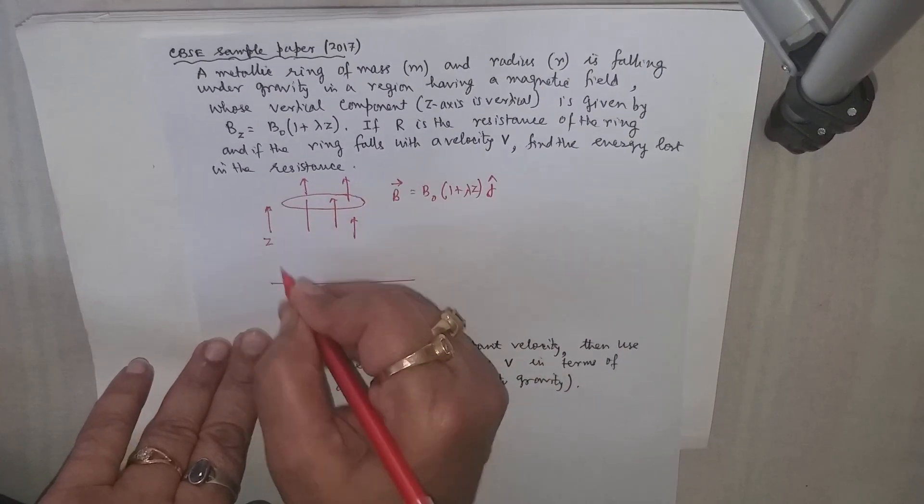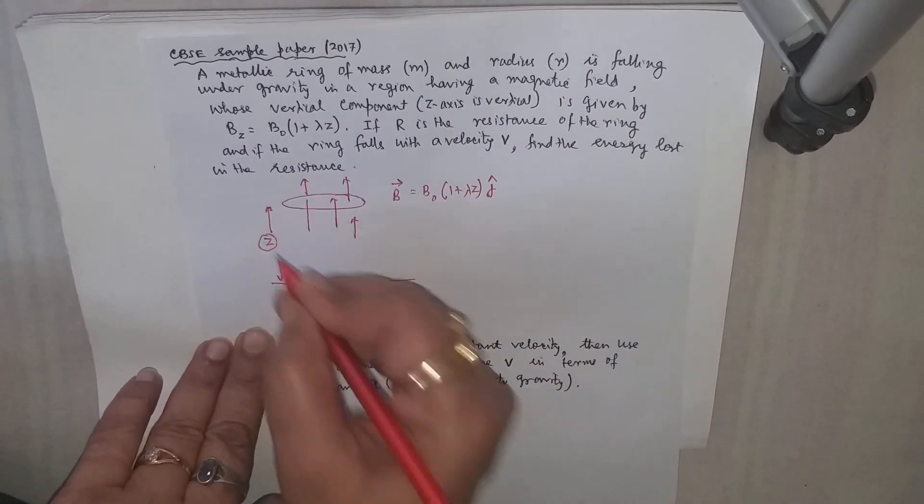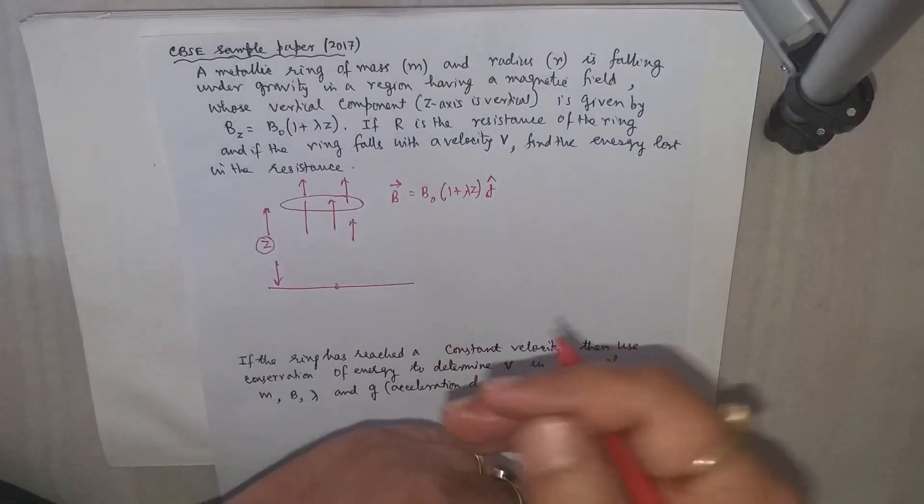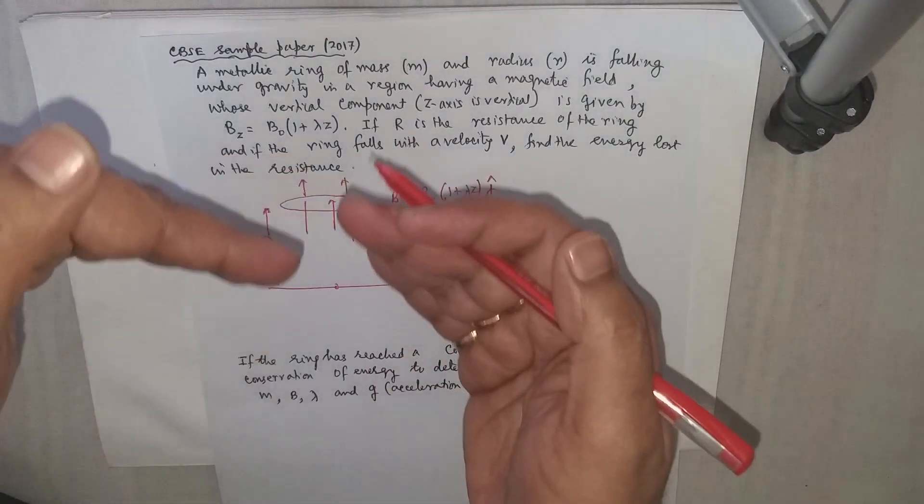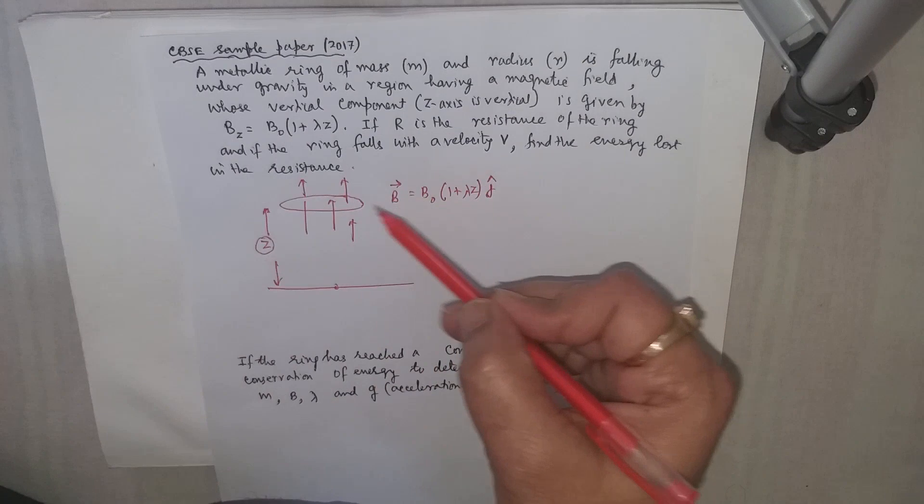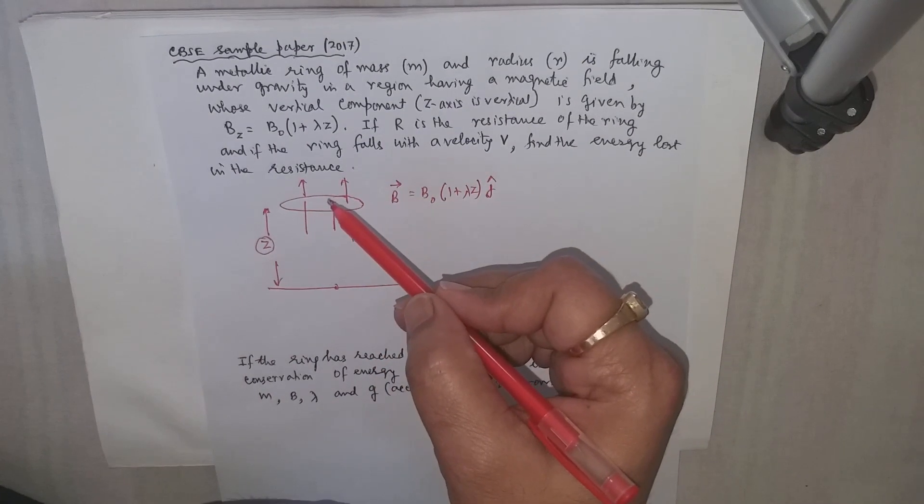Let's take this distance at any moment as z from the ground. So upward direction we take it as positive. As the ring is falling down, the magnetic field strength passing through this ring decreases.